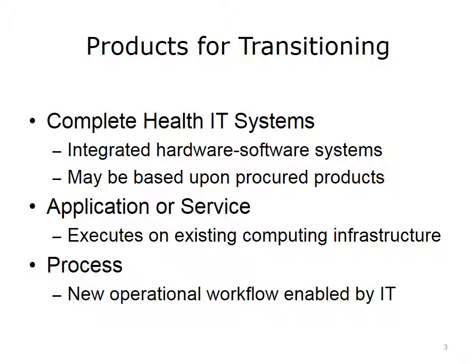Here are some examples of the kinds of products that might arise from your project — the elements we talked about in terms of transitions. There is quite a possible range. It could be complete health IT systems, integrated hardware and software systems planned for use in some operational environment, or an application or service that runs on existing computing infrastructure, or a new process such as a new operational workflow enabled by IT. The transition steps depend on the kind of product being transitioned and the setting the system will be implemented in. Nothing works in a vacuum, and it is important to appreciate both the kind of product you have and the nature of the operational environment.